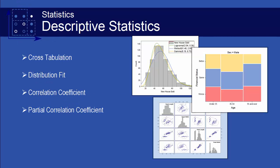Origin Pro offers several advanced tools for statistical analysis. In the area of descriptive statistics, Origin Pro offers tools for cross-tabulation, distribution fits, calculation of correlation coefficients, and partial correlation coefficients.